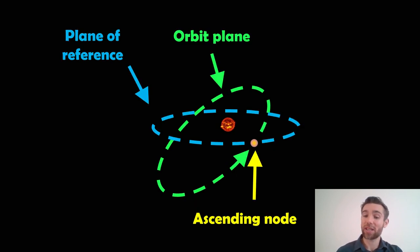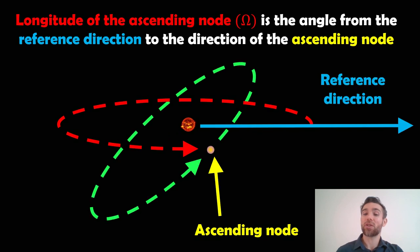Looking at this here, we've got our ascending node and our plane of reference. What we now need to understand is what the longitude of the ascending node is going to be. The longitude of the ascending node is the angle from the reference direction to the direction of the ascending node.